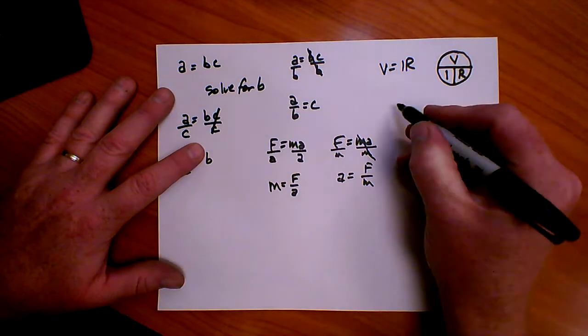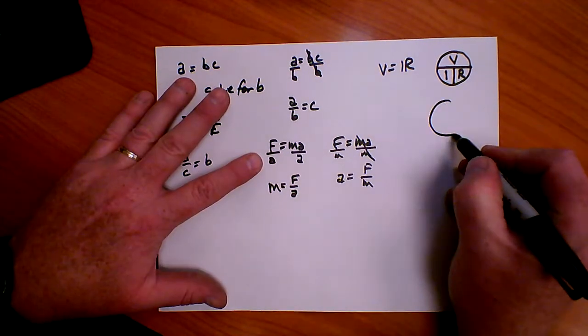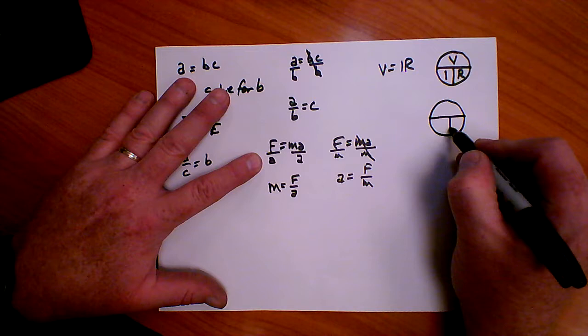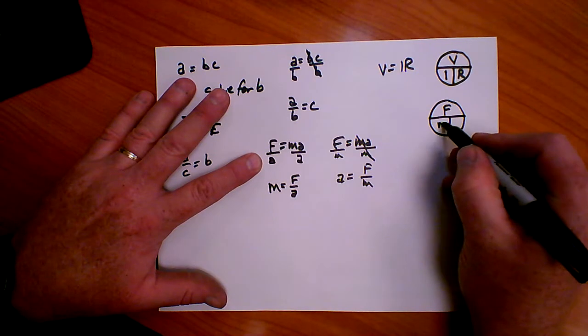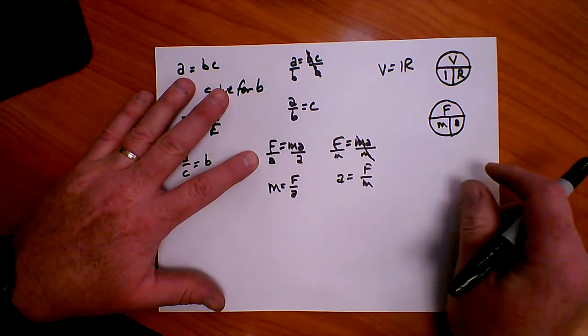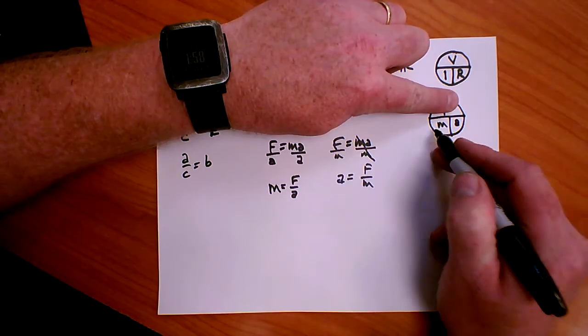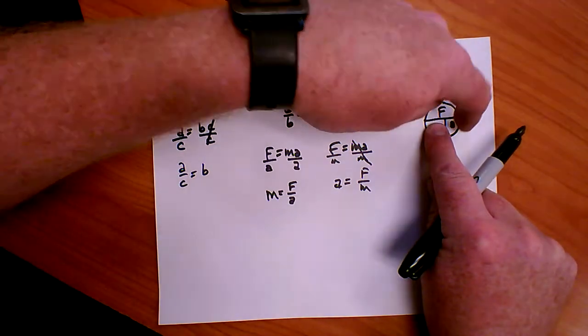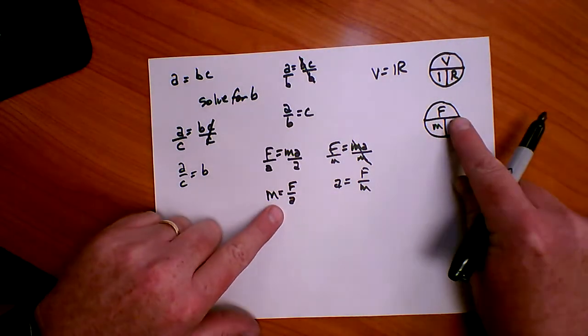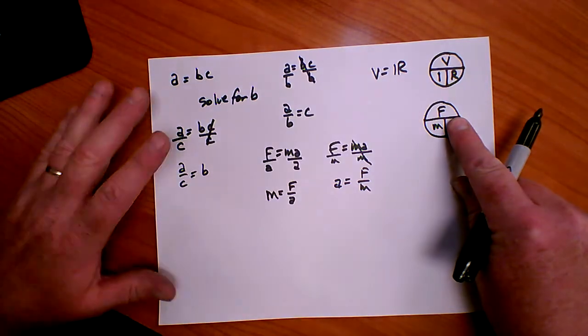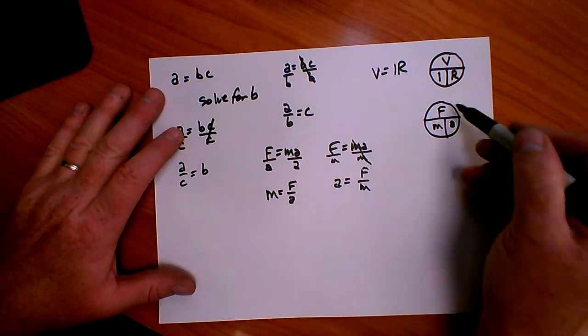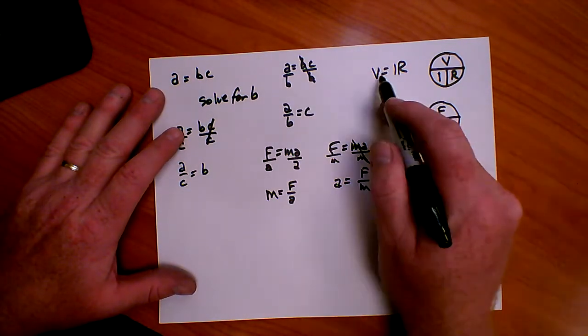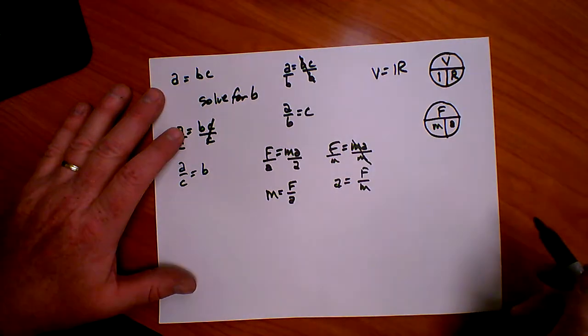Let's just double check that. Does that work for F equals MA? F equals MA. So F equals MA. M equals F over A. A equals F over M. So if it's helpful, this circle diagram can help if you just have a three-variable equation like this.